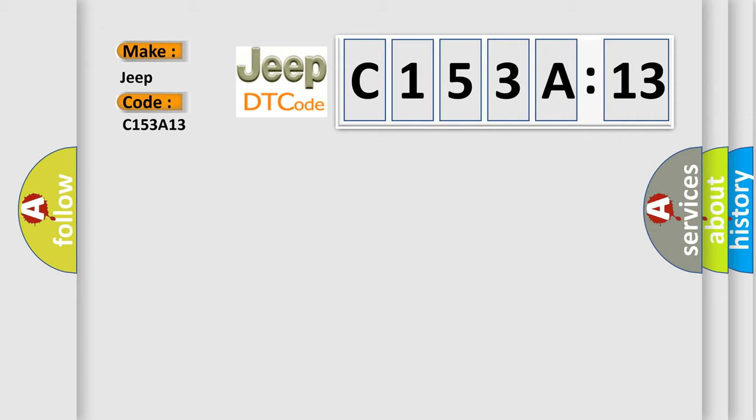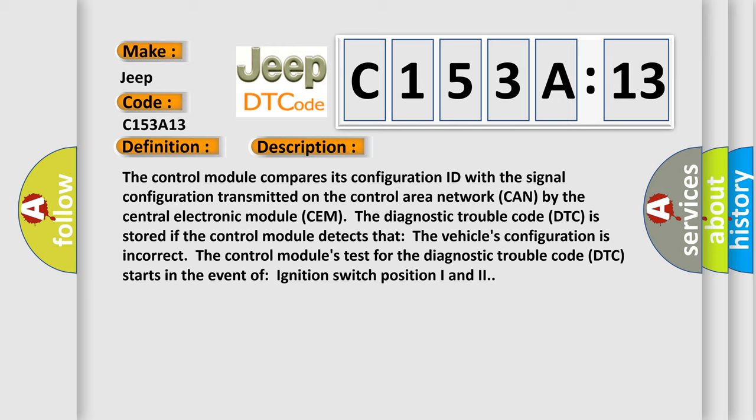The basic definition is: incorrect component installed. And now this is a short description of this DTC code. The control module compares its configuration ID with the signal configuration transmitted on the control area network CAN by the central electronic module.